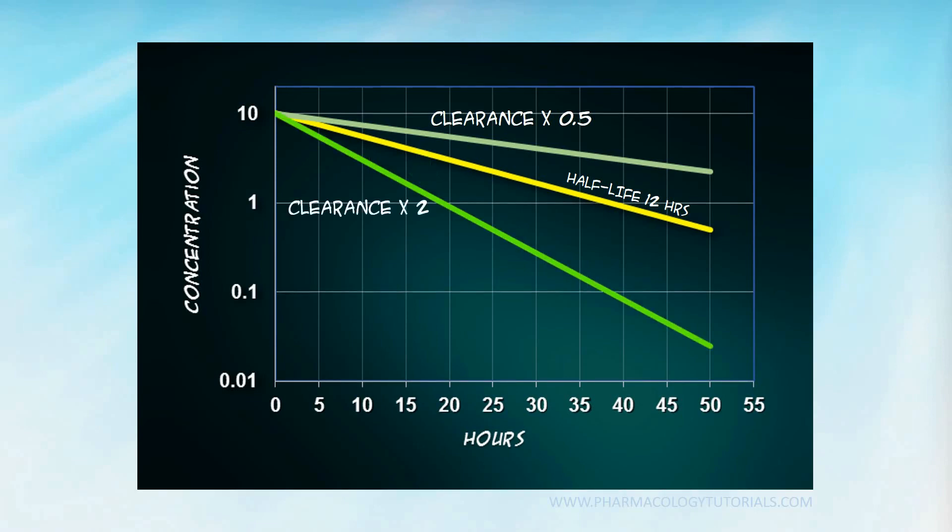Together with changes in half-life, clearance changes also affects the AUC, or area under the curve. But note that the CNOT remains unchanged. This is because the volume of distribution was unchanged.